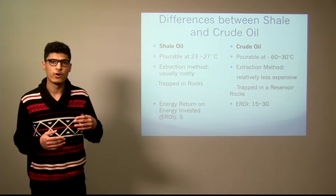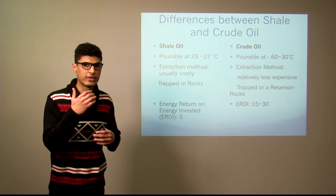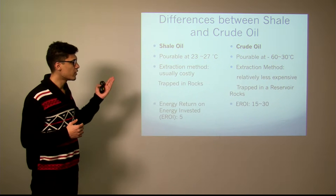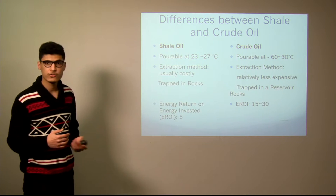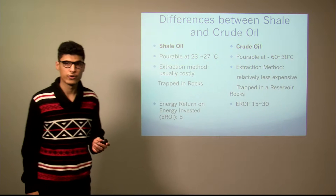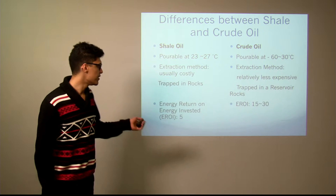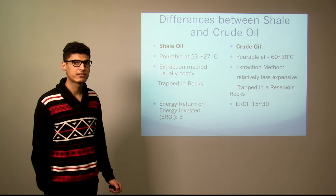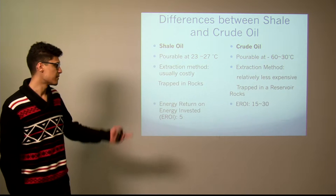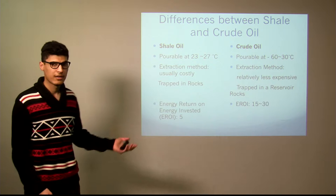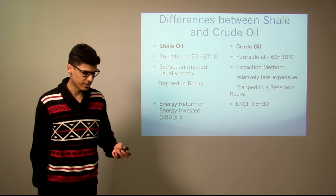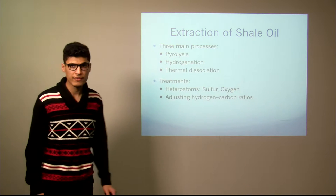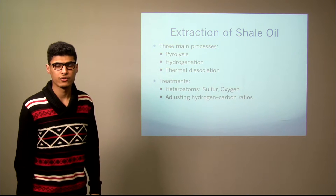That ratio is 5 for shale oil and 15 to 34 for crude oil. You can see it's more profitable to extract or produce crude oil because the benefit is about 15, which is almost three times that of shale oil. So there are three main processes to extract shale oil particularly.